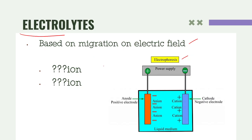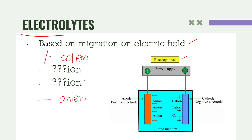Electrophoresis can also be used since it is composed of either a positive or negative electrode. Electrolytes carry different charges — positive or negative. Those that carry a positive charge are called cations, whereas negatively charged electrolytes are called anions. Looking at electrophoresis, there are two electrodes: the positive electrode called the anode and the negative electrode called the cathode.